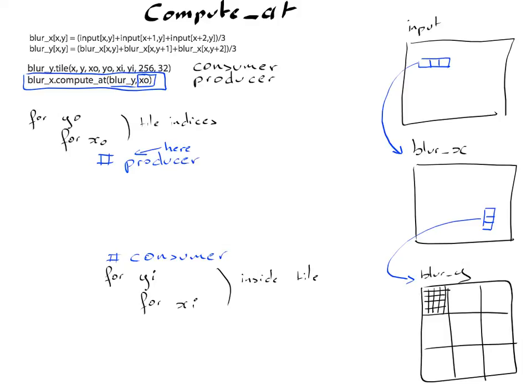So at this level of the loop nest, we are about to compute blur y, the consumer, for a full tile. So now the big question we have is how much of blur x do we need in order to be able to do this?